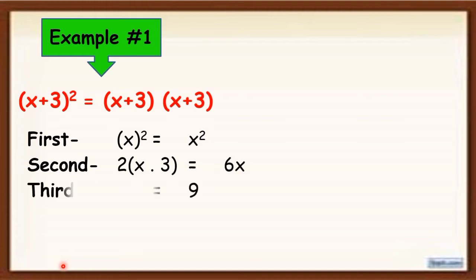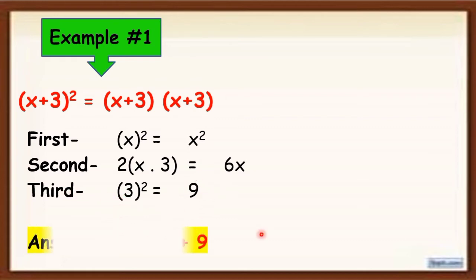The next term is square the last term. The last term here is 3, and if you square it, the answer is 9, because 3 times 3 is equal to 9. So the final answer is x squared plus 6x plus 9.